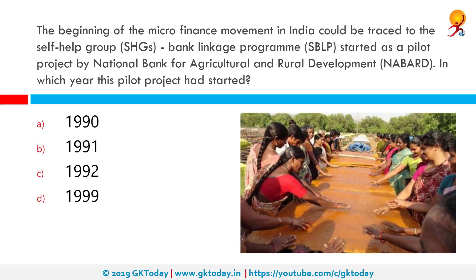The beginning of the microfinance movement in India can be traced to the Self-Help Group Bank Linkage Program, started as a pilot project by the National Bank for Agricultural and Rural Development. In which year did this pilot project start? The correct answer is 1992. The SHG Bank Linkage Program aims to deliver financial products and services to the section of the Indian population that lacks access to formal banking, which typically meets its financial needs through informal sources such as moneylenders, traders, family, and friends.